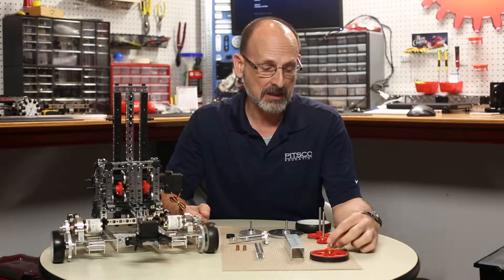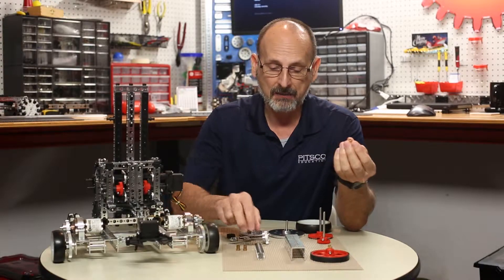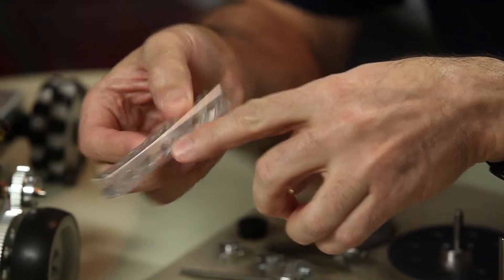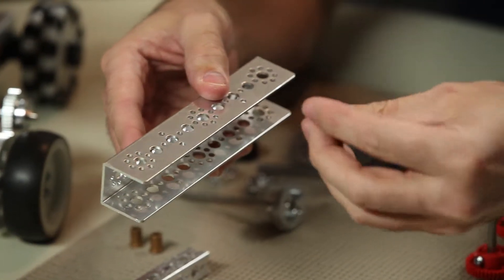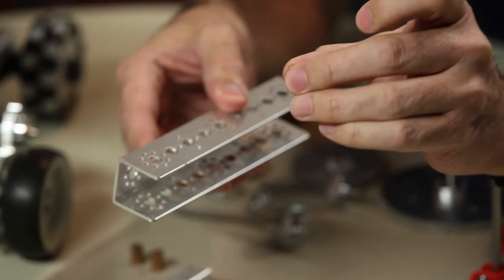And the key to this is going to be the bushing sizes that we use, because we know already that the large hole size for both the Prime elements and the Max elements is the same size. So the difference between these is going to be the bushings that we use.